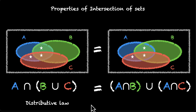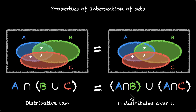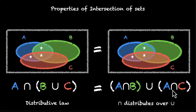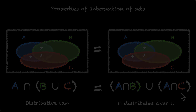This is called the distributive law — because we're distributing intersection over union. The way to remember it: think of intersection as multiplication and union as addition, so A times (B plus C) equals A times B plus A times C. And with this, we've covered most of the fundamental properties of intersection and union of sets.